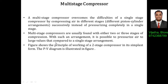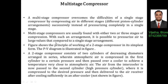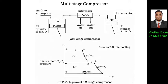The figure shows the principle of working of a two-stage compressor in its simplest form, and the PV diagram is also illustrated. A two-stage compressor consists of two cylinders decreasing in diameter arranged in series. Atmospheric air is compressed in the first cylinder to a certain pressure, then passed over a cooler to achieve temperature very close to atmospheric. The air from the intercooler is then passed to the second cylinder — the high-pressure cylinder — where it is compressed to the desired pressure and delivered to the air receiver after an after-cooler.